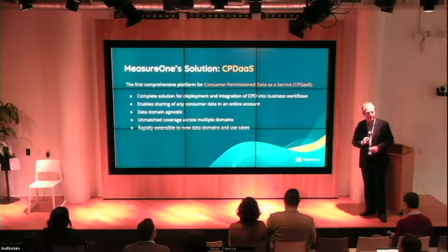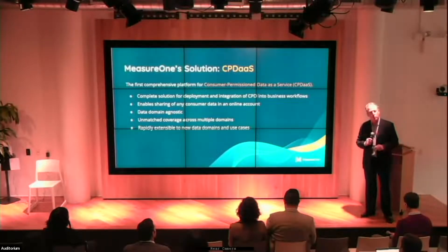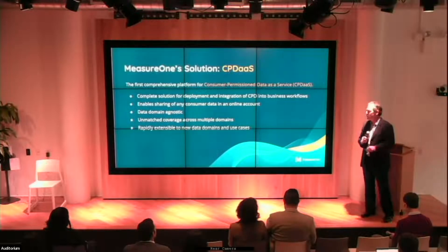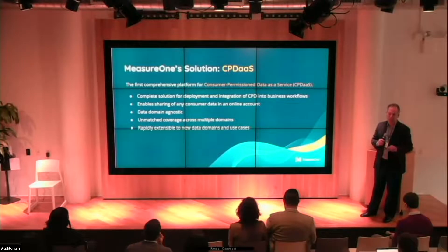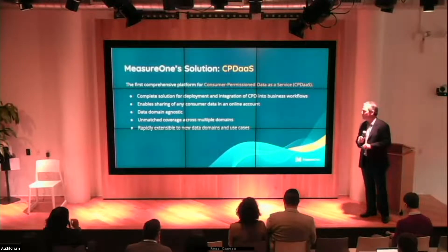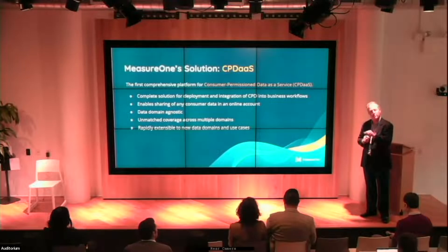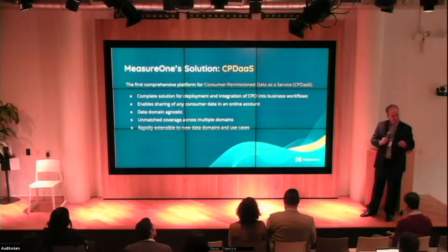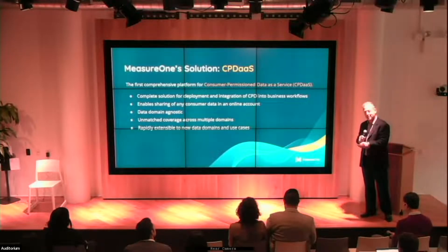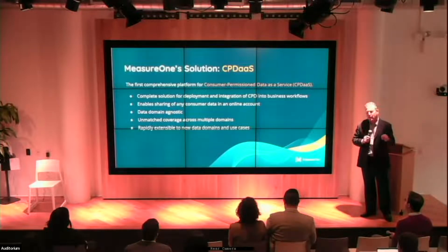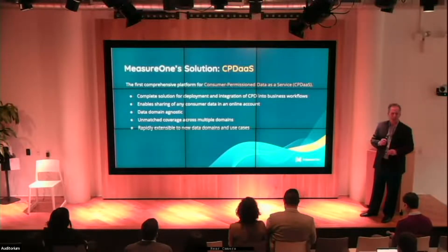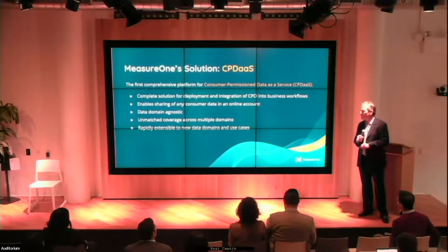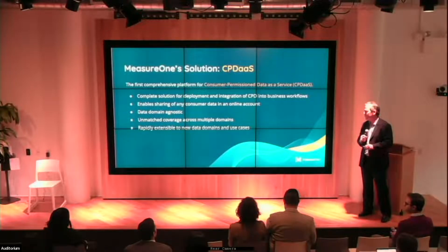This is where Measure One comes in. We've built the first platform that enables businesses to embed Consumer Permissioned Data into their workflows — a complete solution for using it in business processes. It enables consumers to share their data through Measure One with those businesses. We don't care what the data is — pay stubs, insurance policies, academic transcripts, income, employment data. Any type of data can be shared. We have unmatched coverage across multiple domains and continue adding new domains and document types.